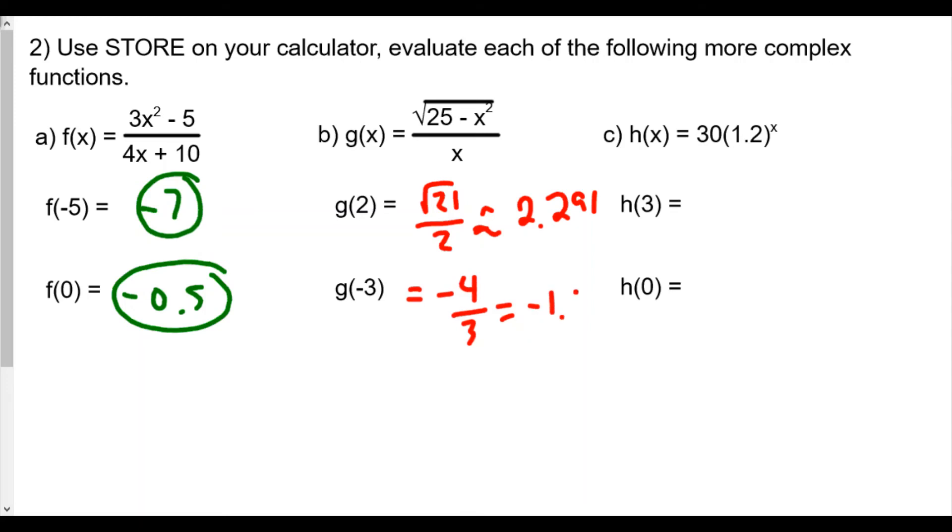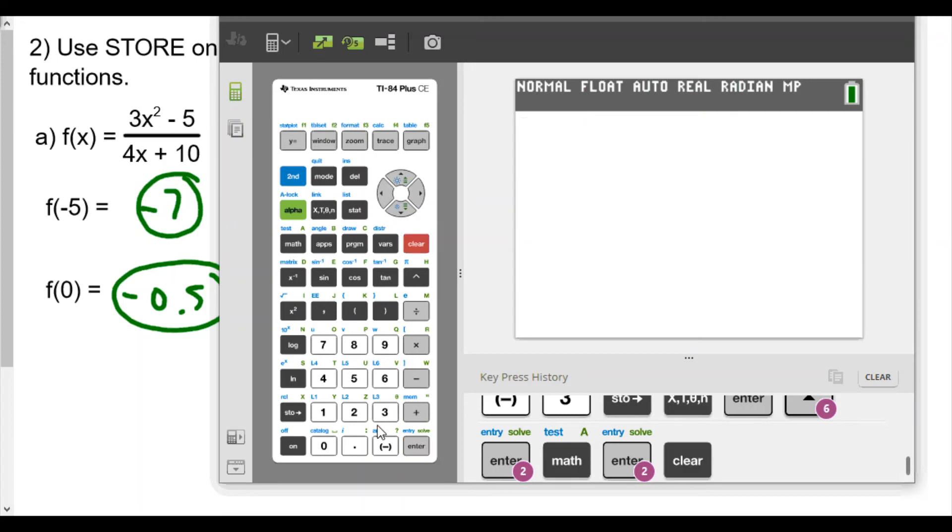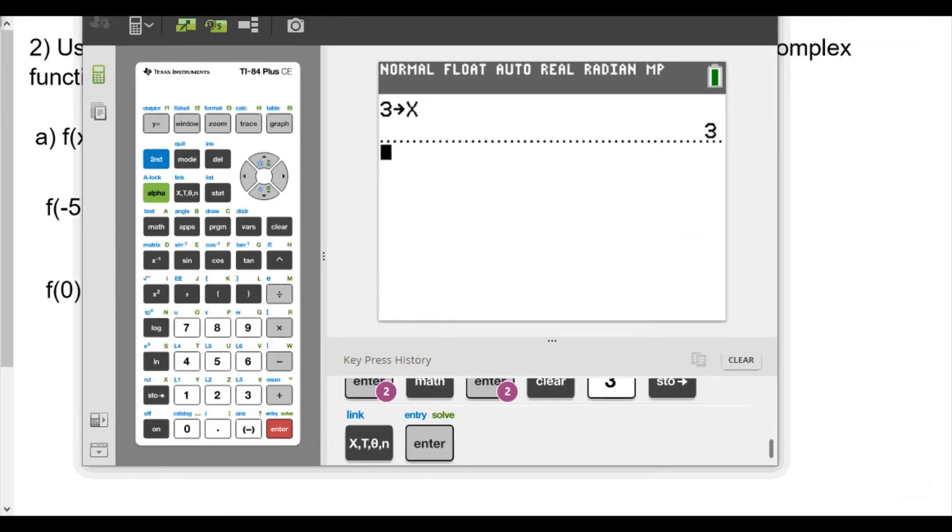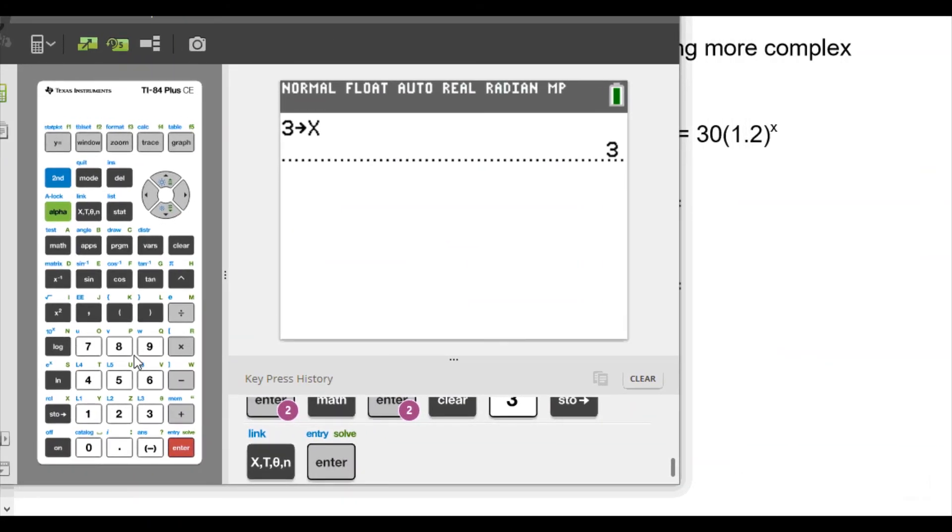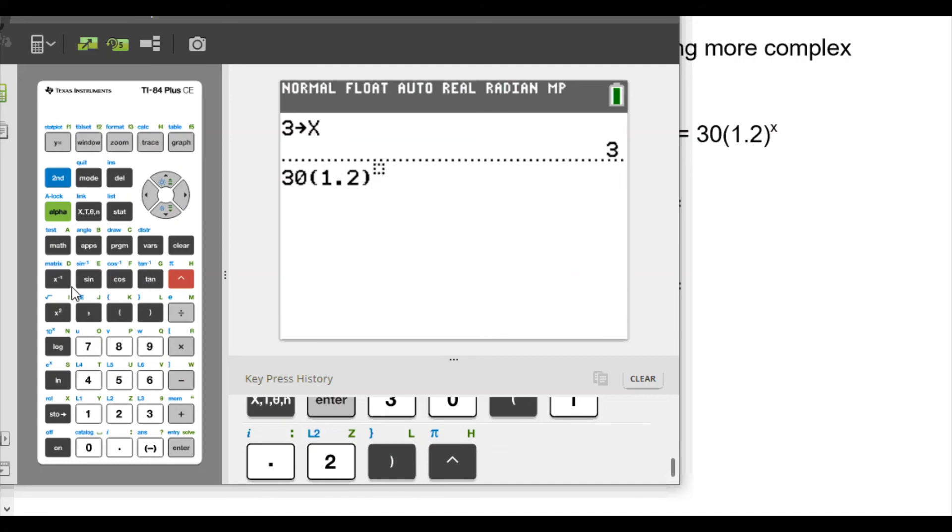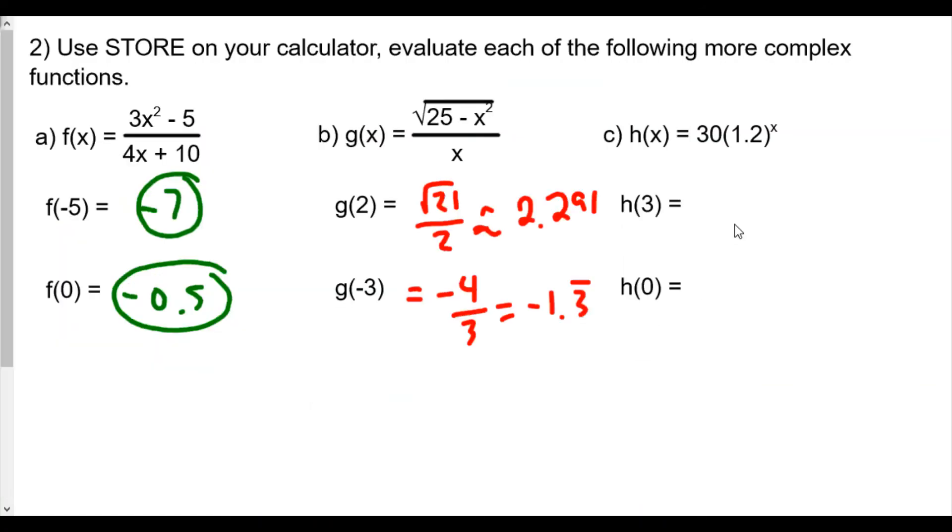And now for h of x, which is 30 raised to the 30 times 1.2 to the x power. So now h of 3 and h of 0. Here's how I do this: caret button raised to the x power. This is what was called an exponential function, because an exponential function is going to be a function where the variable is the exponent. You guys learned it before, but we'll review that over again. Enter and we get 51.84.